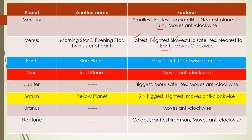The fifth planet is Jupiter. Jupiter is the biggest of all the planets and has the most number of satellites. It moves in anti-clockwise direction. The next planet is Saturn. It is also called as the yellow planet — I have marked it in yellow color. It is the second biggest planet, the lightest planet, and moves in anti-clockwise direction.